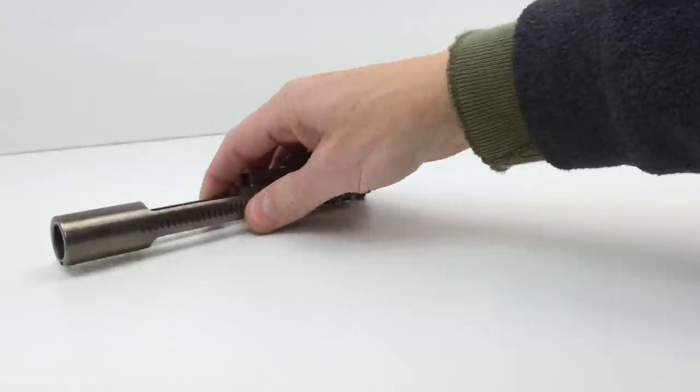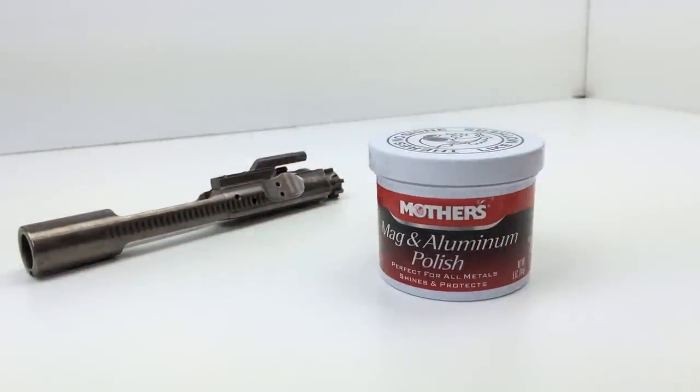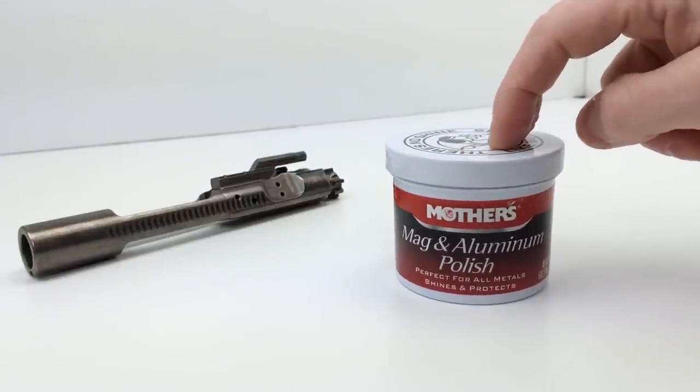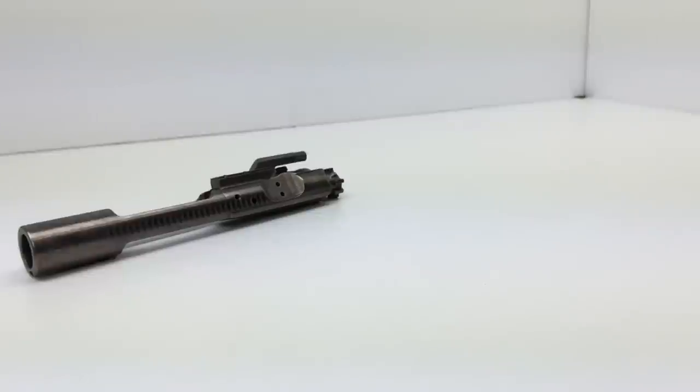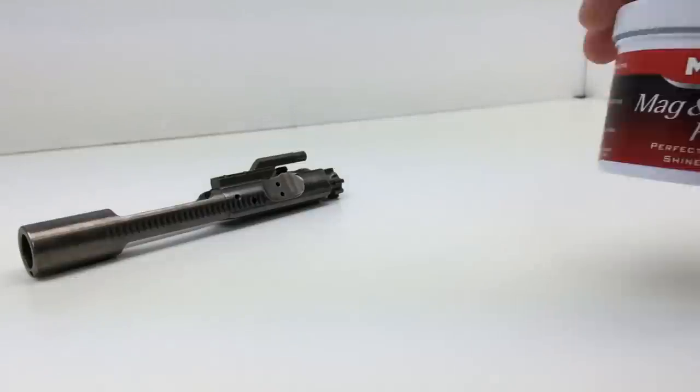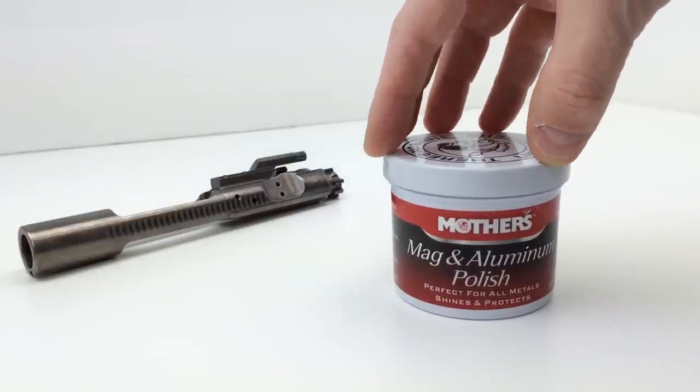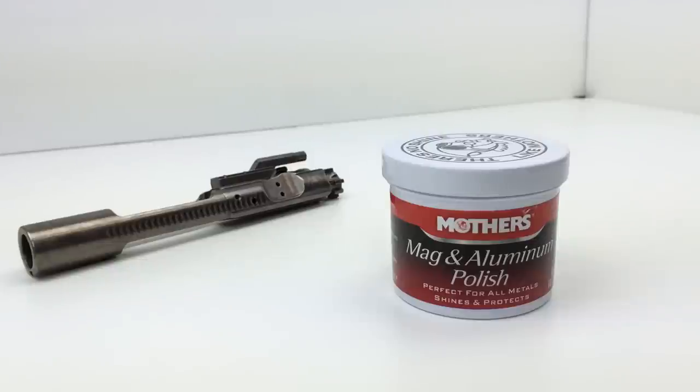The number one important item that you're going to need to polish this up is some polish. Now, this is Mother's Mag and Aluminum Polish. I like this stuff. It works great. And it's designed for primarily aluminum wheels. It's not designed for gold plating, chrome, anodized, painted, or coated metals. I guess you could kind of say that nickel boron is a coating, but aluminum wheels have a certain amount of nickel in it as well. So, as you polish aluminum, aluminum can oxidize and get dull as well.